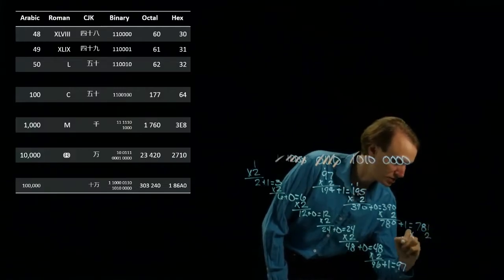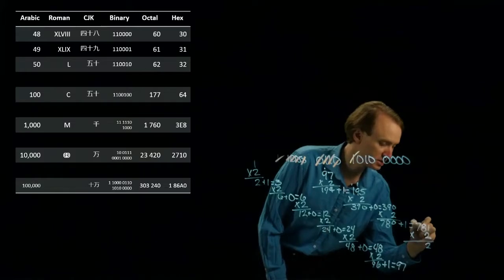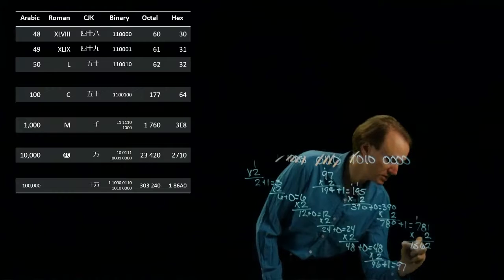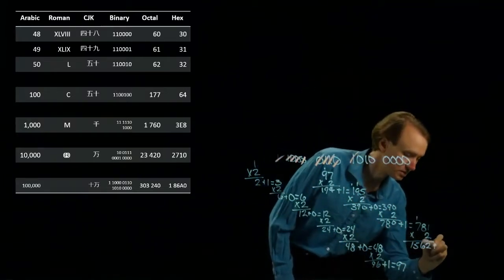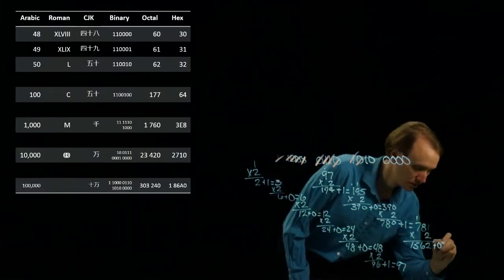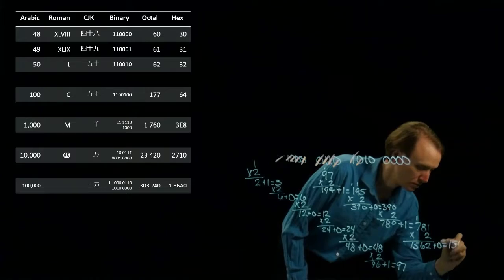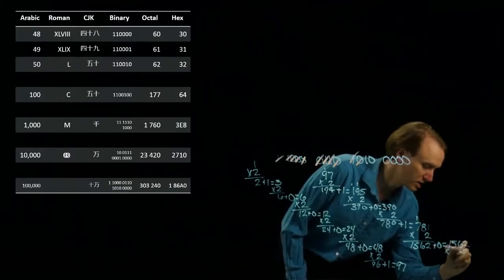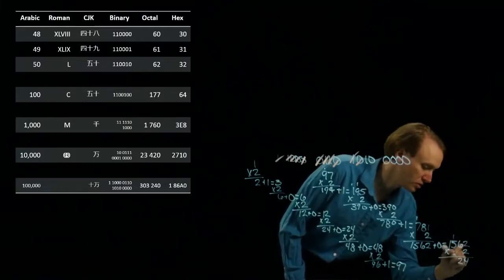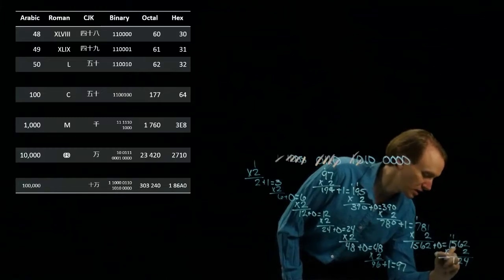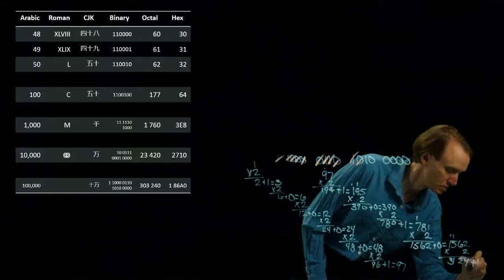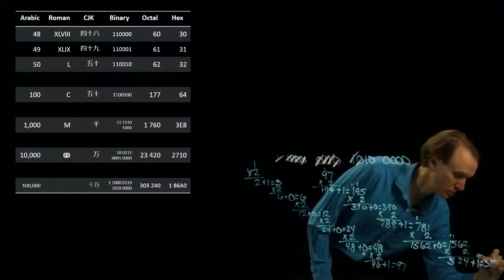Multiply by 2: 1562. Add the next bit — 1 — giving me 1563. Then multiply by 2, carrying as needed. Add the next bit. I now have 3125, and then I'll add the next bit, giving me 3125.